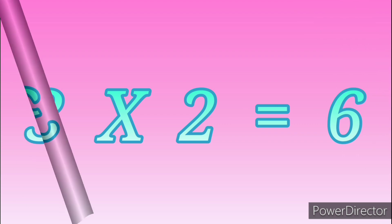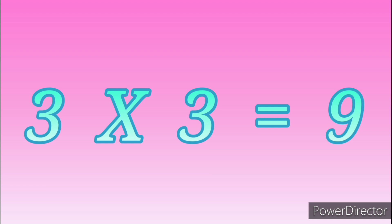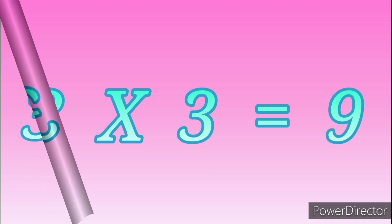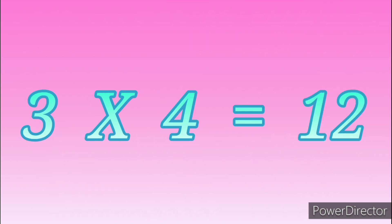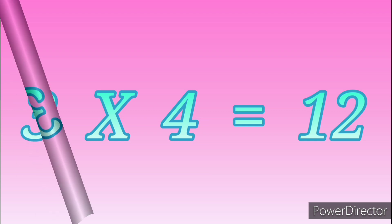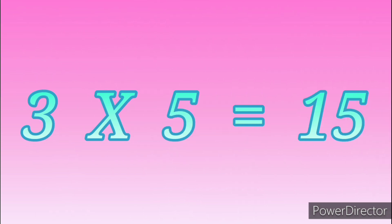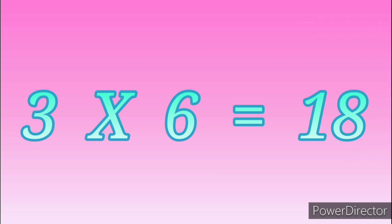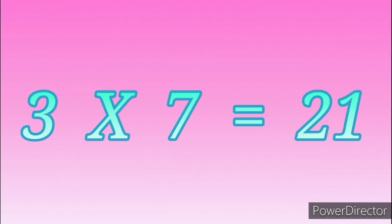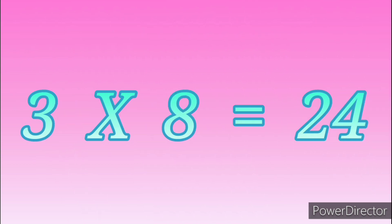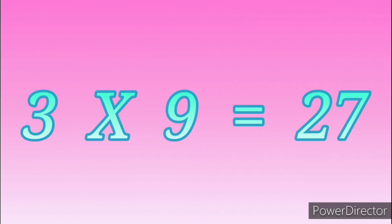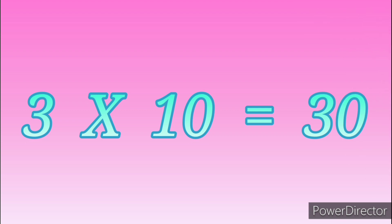3 threes are 9, 3 fours are 12, 3 fives are 15, 3 sixes are 18, 3 sevens are 21, 3 eights are 24, 3 nines are 27.